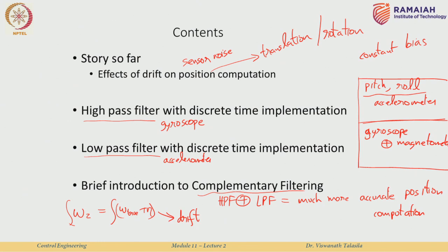What we are claiming in this lecture is that by combining the gyroscope with an accelerometer using these filters, you can actually reduce drift. There is another way to compute yaw: combining the gyroscope with a magnetometer, which gives the yaw or heading angle. That can be done using the same complementary filter technique, but with a magnetometer instead of an accelerometer. For today's lecture, we focus only on combining gyroscope and accelerometer data to compute pitch and roll.